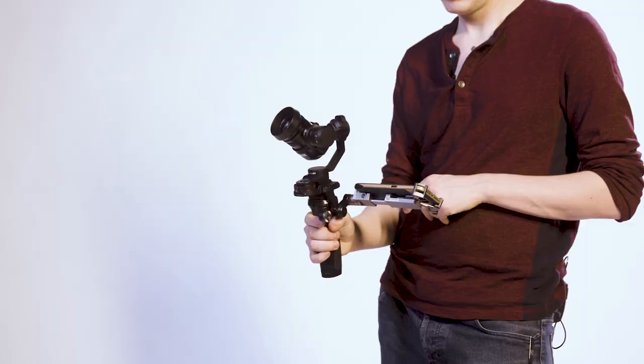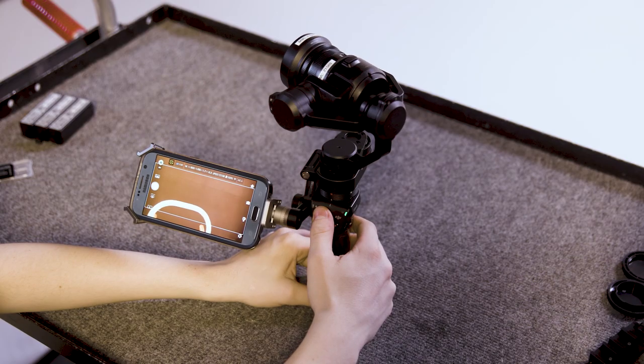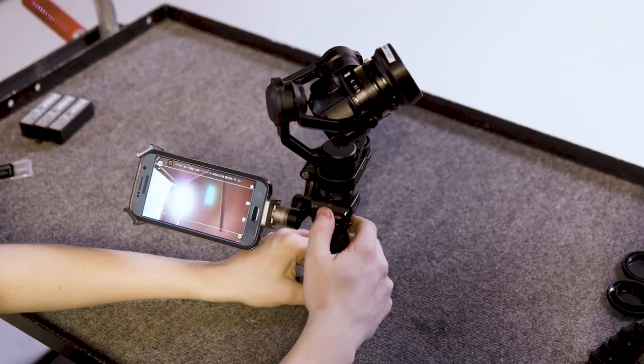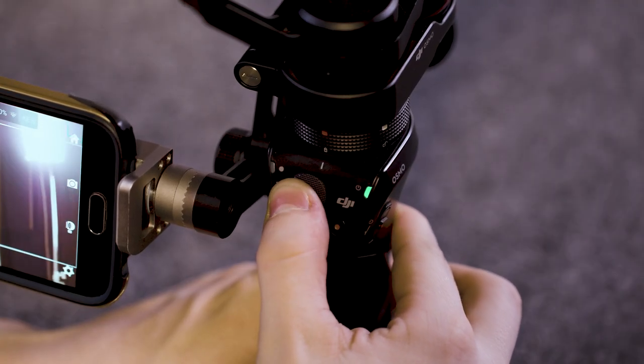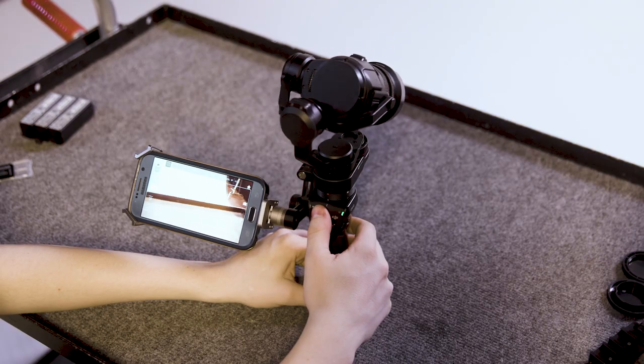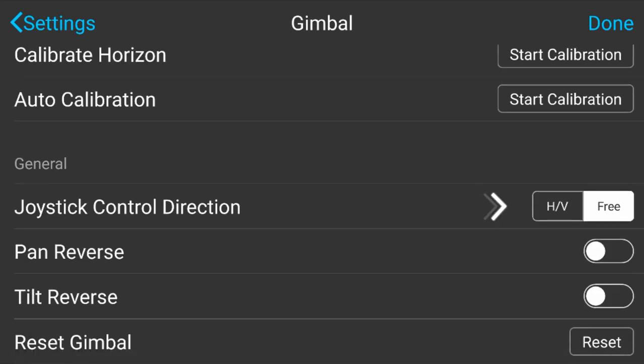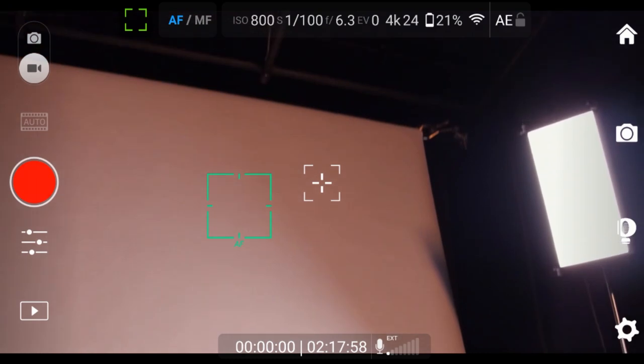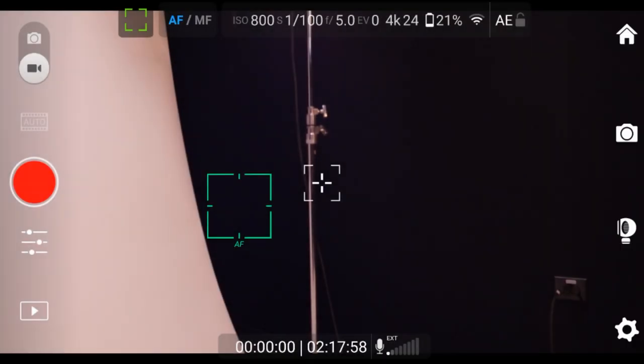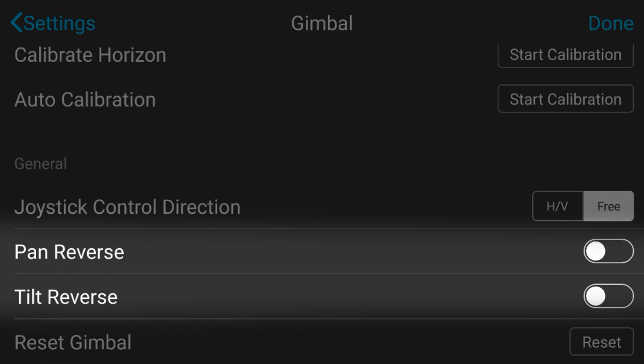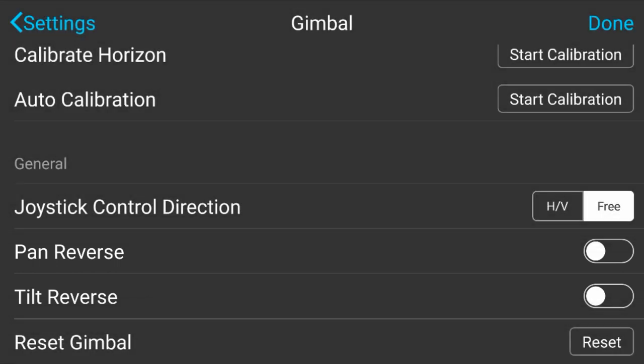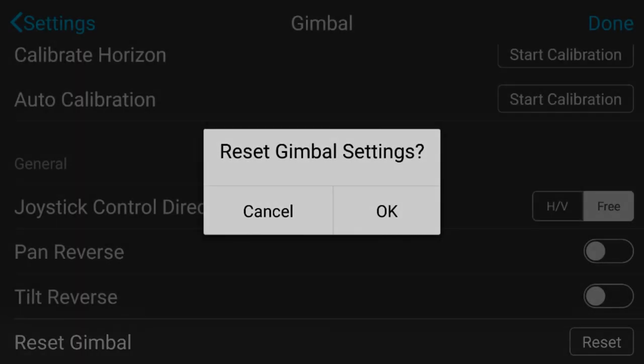The second method of operation is with the joystick on the Osmo handle. Imagine that the joystick is the camera, so that when I push up, the camera tilts up, right, and the camera moves right, etc. The joystick will override any other gimbal settings such as Pitch Lock or Orientation Lock. You will find additional controls for the joystick in the Advanced Control menu. Below the Horizon Calibration, we can adjust the joystick control direction from H-V or Free. H-V is default and will not allow you to pan at the same time you are tilting. With Free, you are able to tilt and pan at the same time. You will also see options to reverse the tilt and pan directions of the joystick. If you need the gimbal to return to default settings, simply hit Reset and all gimbal settings will return to default.